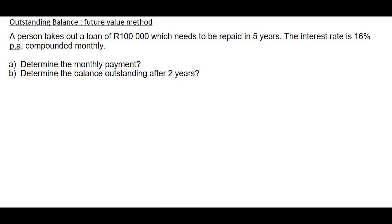In this question, we have a person who takes out a loan of 100,000 Rand that needs to be repaid. Question A says, determine the monthly payment. So when you take out a loan from the bank, when do you get the money? Well, you get it instantly. You get it in the present. So we use the present value formula. And question A is fairly straightforward. There's no catches over there.